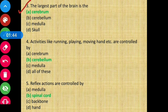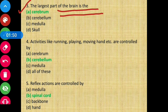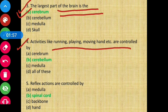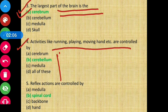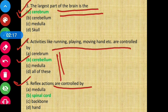Question 3: The largest part of the brain is — the answer is cerebrum. Question 4: Activities like running, playing, moving hand, etc. are controlled by — the answer is cerebrum, option B. Question 5: Reflex actions are controlled by — the answer is spinal cord.